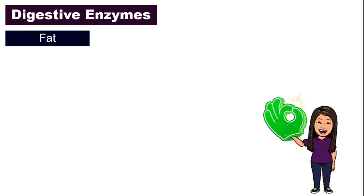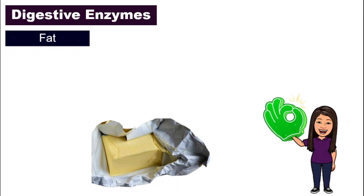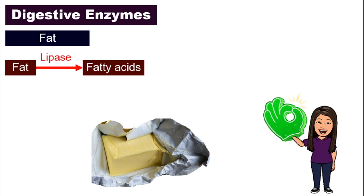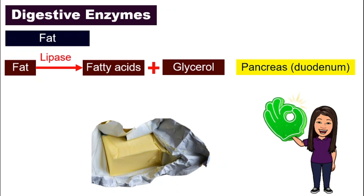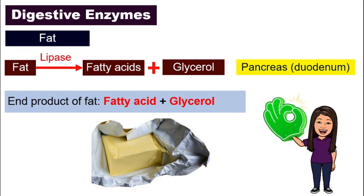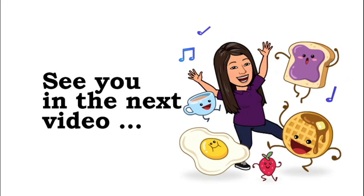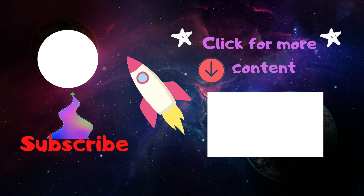For fat — a good example is butter — the enzyme responsible is lipase. Lipase digests fat into fatty acids and glycerol; this happens in the duodenum, and the pancreas is the one that contributes lipase. The end product of fat digestion is fatty acids and glycerol. That's all for this video — see you in the next one. Bye! If you learned something new, don't forget to like and subscribe.